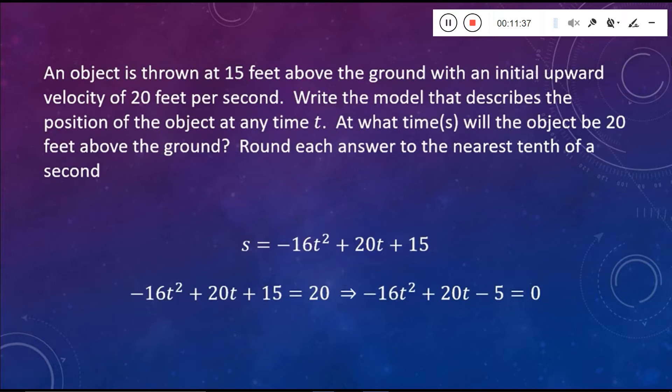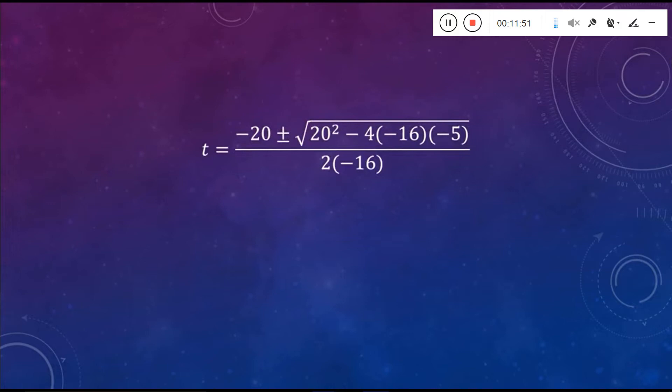There we go. There's our model, our new model that we're going to be working with, our new quadratic equation. And again, we're going to use the quadratic formula here to figure out what t is. We're not going to try to factor it. We're not going to try to complete the square. It's going to be way too time consuming. So taking your pieces, substituting into the quadratic formula, it's going to be negative 20 plus or minus the square root of 20 squared or 400 minus 4 times negative 16 times negative 5.